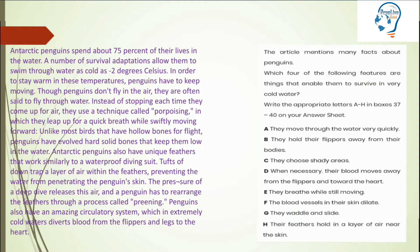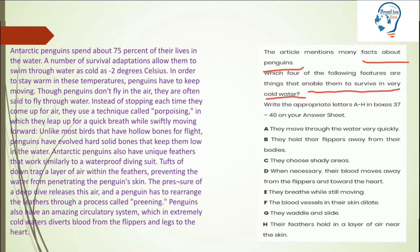What is the keyword here? The keyword is 'facts' — the article mentions many facts, so we care about facts. The key phrase is: 'which four of the following features are things that enable them to survive in very cold water.' Enable them to survive in cold water — these are my keywords. Now read the information in the passage and then check which options are correct.